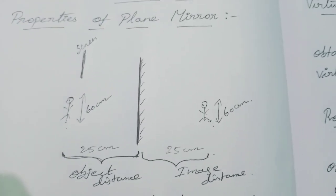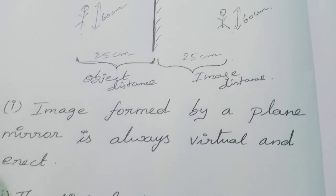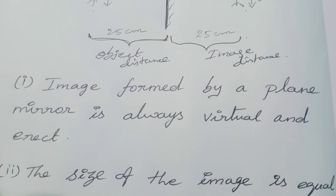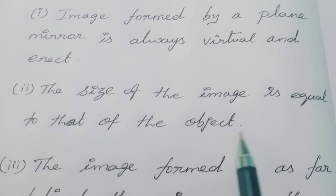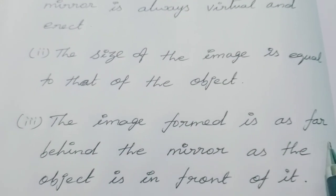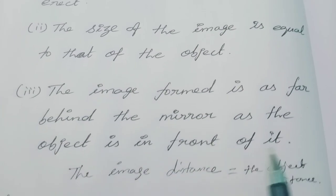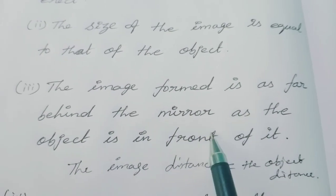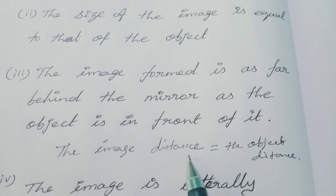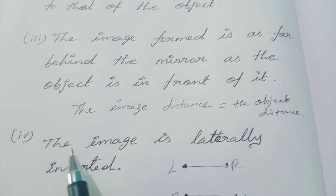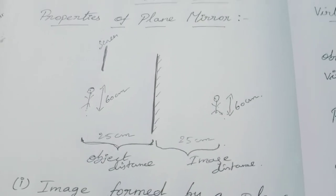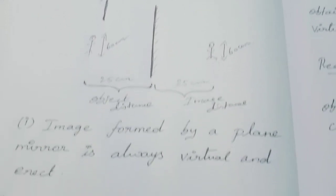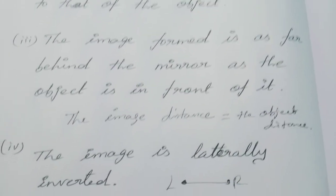To summarize the properties of the plane mirror: first, the image formed is always virtual and erect; second, the size of the image is equal to the size of the object; third, the image formed is as far behind the mirror as the object is in front of it, meaning image distance equals object distance; and fourth, the image is laterally inverted. Thank you, see you in the next video.